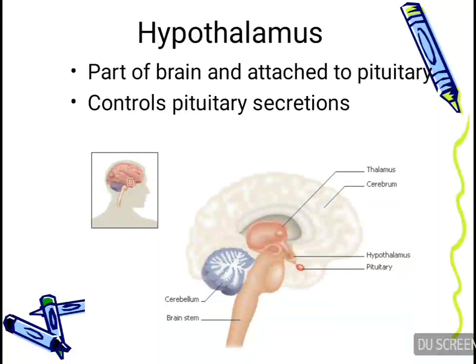Next is the hypothalamus. The hypothalamus is attached to the pituitary and is a major part of the forebrain. Its major function is to control the pituitary secretions.